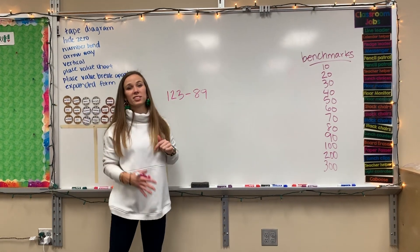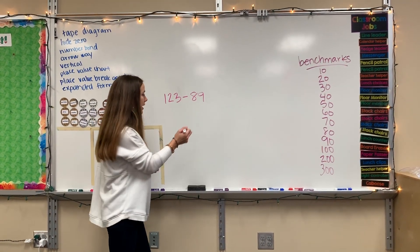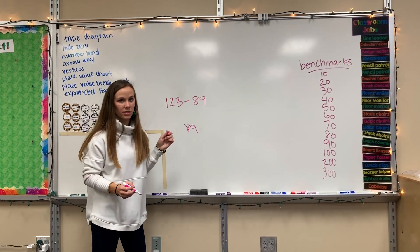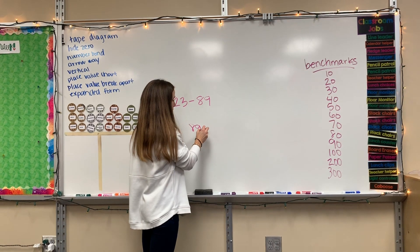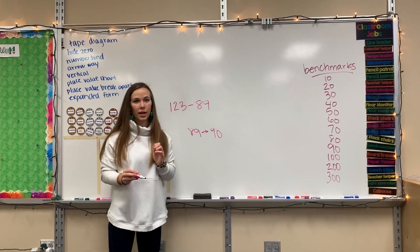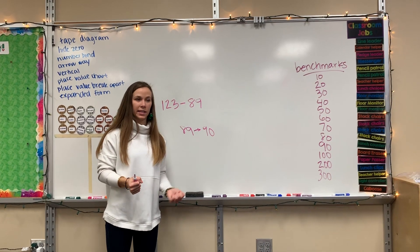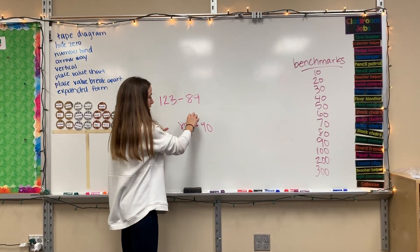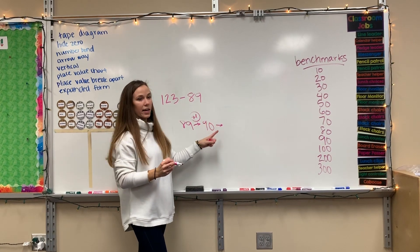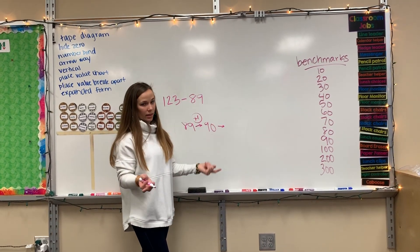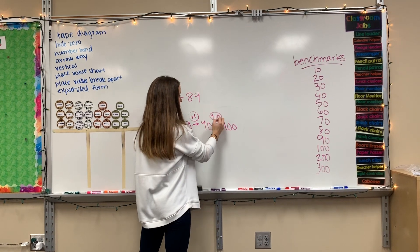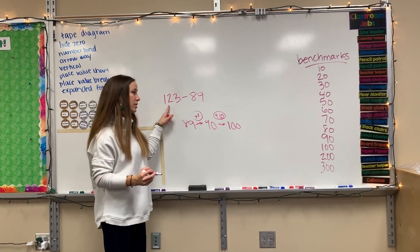I'm going to show you how to do it with subtraction, so we want to start with our smallest number, 89, and see how many times I have to move to get to 123. I look at 89 and say my first benchmark after 89 would be 90. How many did I need to add to get from 89 to 90? If I count on — 89, 90 — I only needed to add one. Then my next benchmark would be 100, so I draw an arrow. Every time you draw an arrow, that's when you add. And then we would get to 100, needing to add 10 to get there. My goal is to end at 123, so I just can't pass that.